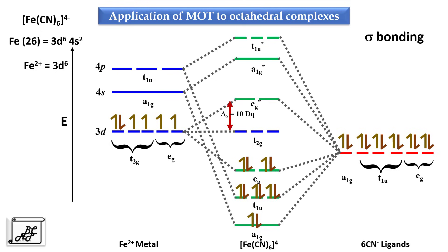Among the 6 electrons of Fe²⁺, cyanide is a strong ligand, therefore the gap between t2g and eg* is very high. We can say 10Dq is higher than pairing energy, therefore all 6 electrons get occupied into the lower t2g orbitals. As there are no unpaired electrons, it is diamagnetic. We have to remember that because cyanide is a strong ligand, the gap between t2g and eg* is very high, and that is how all 6 electrons get paired up into the lower t2g orbital.